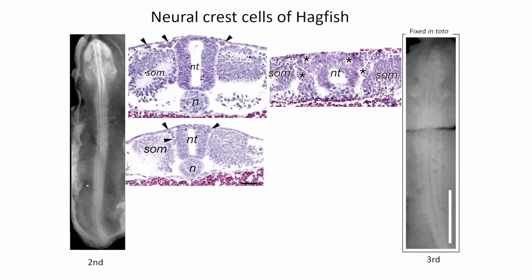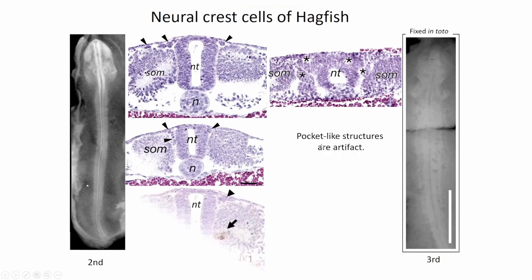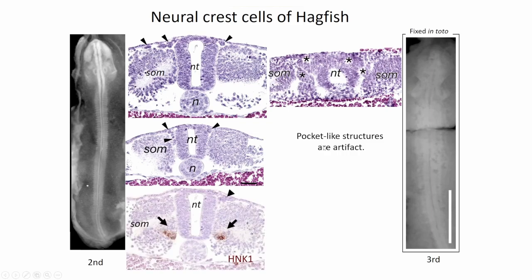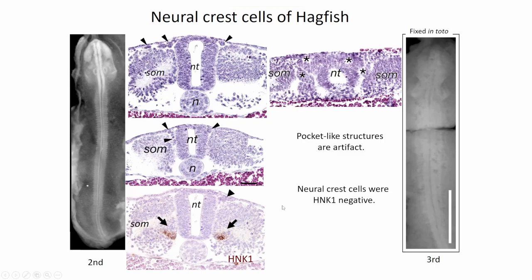One section shows migratory neural crest cells; another was badly fixed — I put it directly in fixative and opened it. In this procedure I saw a pocket-like structure, but I couldn't identify whether cells were epithelialized or migratory. This method was the same as the 1940s paper. So the pocket structure may be an artifact. I then tried the HNK1 antibody used in chick research, but the result was negative.